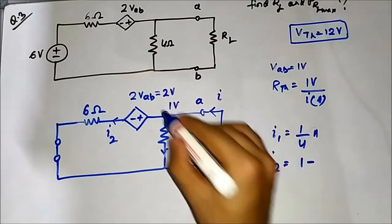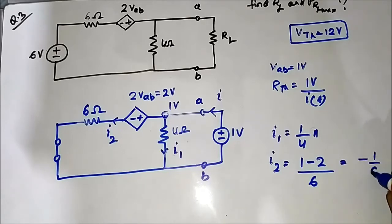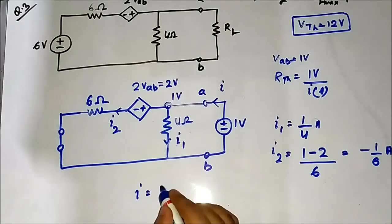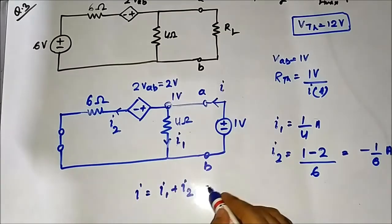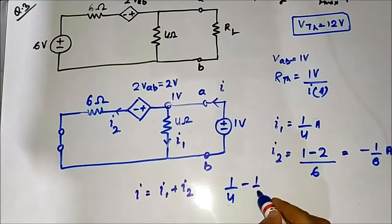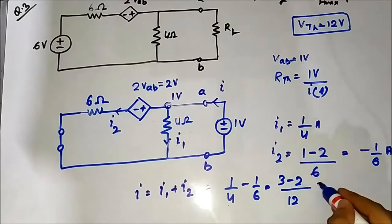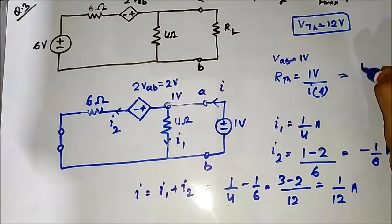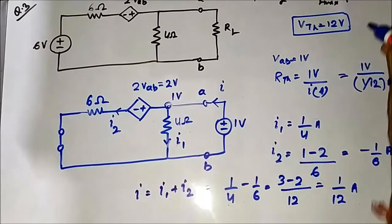I equals I1 plus I2. I1 equals 1 divided by 4 ampere. I2 equals (1 minus 2) divided by 6, which equals minus 1/6 ampere. So I equals I1 plus I2, which equals 1/4 minus 1/6. The LCM is 12, giving 3 minus 2 over 12, which equals 1/12 ampere. Therefore RTH equals 1 volt divided by 1/12 ampere, which equals 12 ohm.